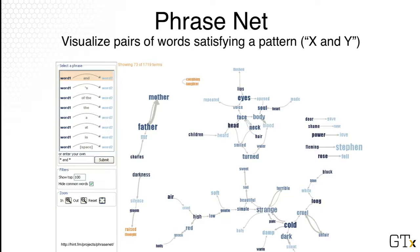You can define the edge any way you want. Here in our example we say 'x and y', but you can also say 'x of the y', 'x the y', 'x and y', or even 'x space y'. So by defining different meanings for the edges, you can end up getting different phrase nets of your documents.